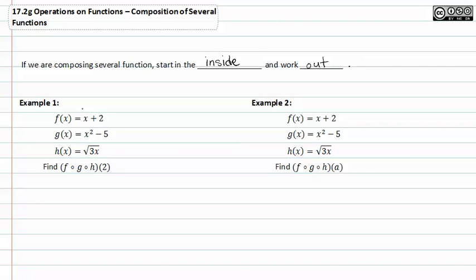In example one, we see we have three functions. We need to find f of g of h of two. Another way of writing this problem would be f of g of h of two. And if we think of it this way, you can also think of substitution. We'll be doing three substitutions with three different functions, plus putting a two in for x. Let's start on the inside and work our way out.